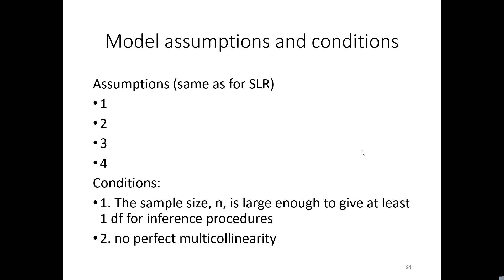That constant variance assumption gets violated a lot and leads to problems we'll discuss later. The third assumption is that errors can't be related to each other — we call that autocorrelation. This gets violated quite a bit, for example with income over time: how much you earn this period is highly dependent on how much you earned last period. We'll talk about autocorrelation after the second midterm.